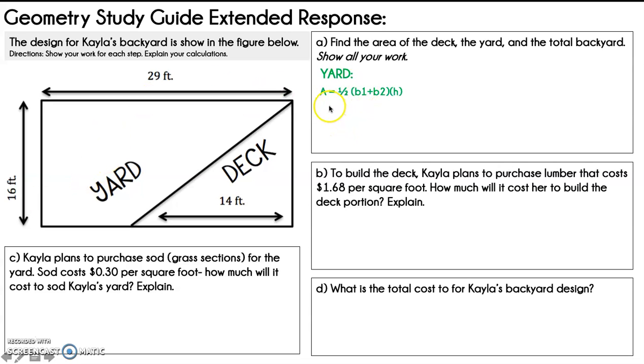So we're going to use the formula area equals one-half parentheses base one plus base two times the height. So filling in what we know, base one is this length right here, so it's 29 feet. Base two is going to be this section right here. Now we don't know this measurement. However, I do know that this entire length is 29, and that this is 14. So I can get this piece by taking 29 minus 14, and that tells me that base two is 15.